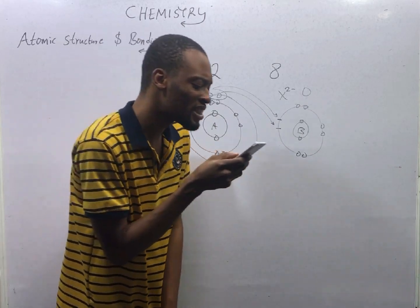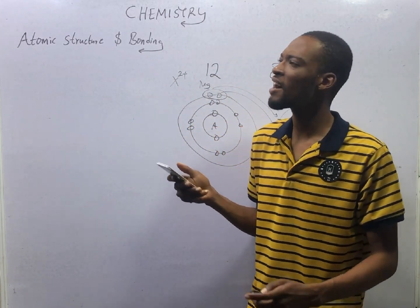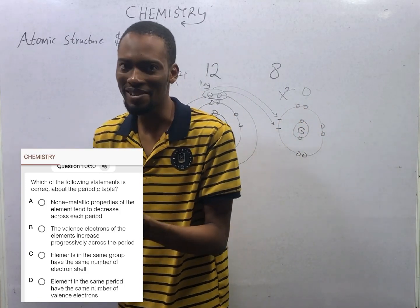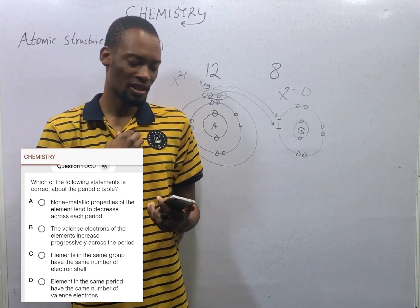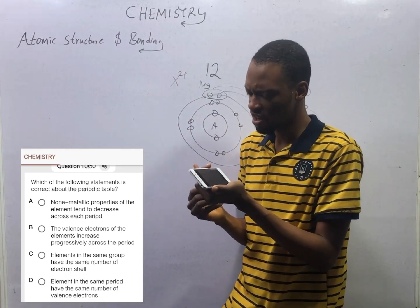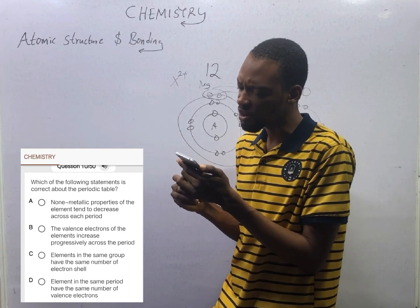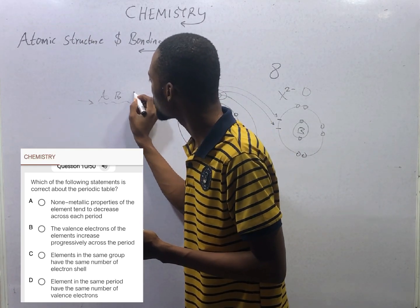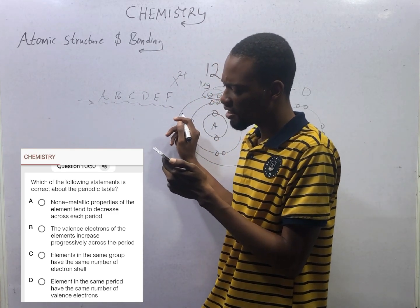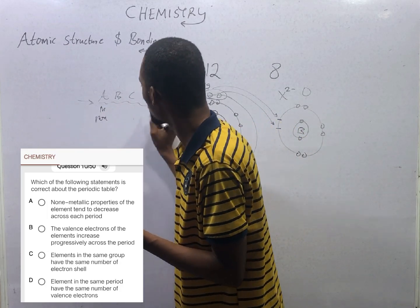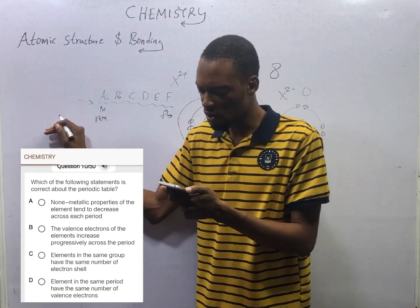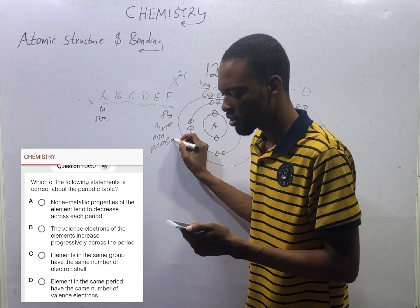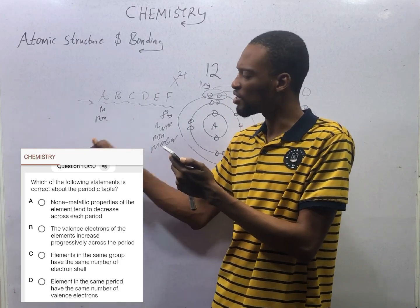Which of the following statements is correct about the periodic table? Option A: non-metallic properties of the element tend to decrease across each period. Option A is saying that as you move across the period from element A through F, A will be more non-metallic than F. This is actually wrong — because as you move across the period, non-metallic properties actually increase. So non-metallic properties of the element increase across the period; they do not decrease. Option A is not true.